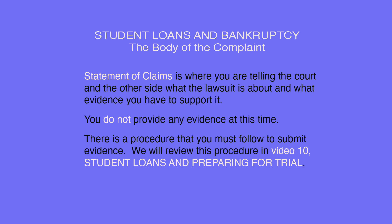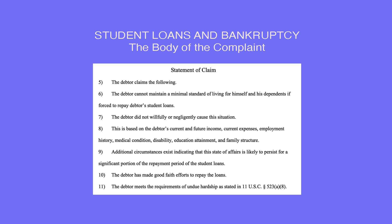Statement of Claims is where you are telling the court and the other side what the lawsuit is about and what evidence you have to support it. You do not provide any evidence at this time — there is a procedure you must follow to submit evidence, which we will review in Video 10. Just copy everything you see in the example. The debtor claims the following: The debtor cannot maintain a minimal standard of living for himself and his dependents if forced to repay the student loans. The debtor did not willfully or negligently cause the situation, based on the debtor's current and future income, current expenses, employment history, medical condition, disability, education attainment, and family structure. Additional circumstances exist indicating this state of affairs is likely to persist for a significant portion of the repayment period. The debtor has made good faith efforts to repay the loans and meets the requirement of undue hardship as stated in 11 USC Section 523(a)(8).